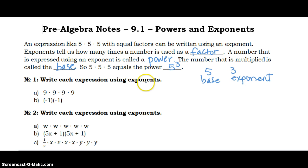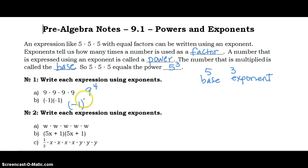Write each expression using exponents. So, 9 is going to be our base, and it's factored 4 times, so it's to the fourth power. Here, be careful — negative 1 is in parentheses and negative 1 is being multiplied times itself two times. So our base is negative 1, and our exponent is 2, so the power is negative 1 to the second power.